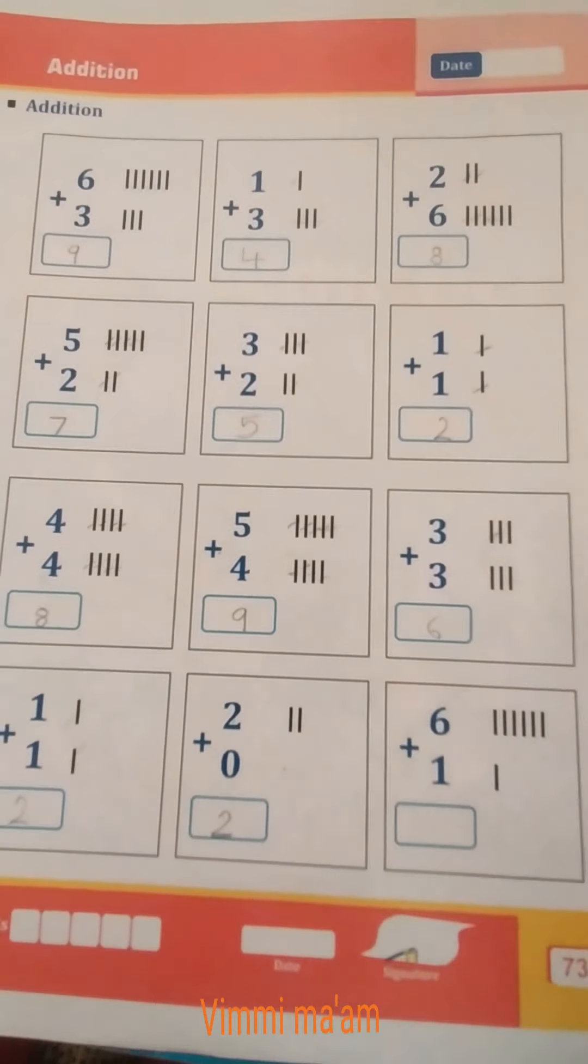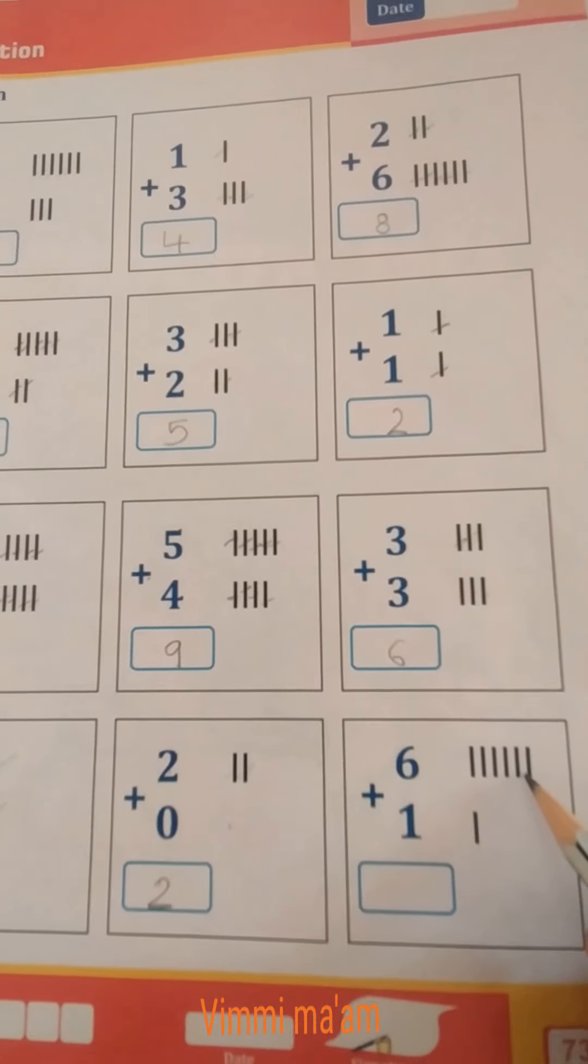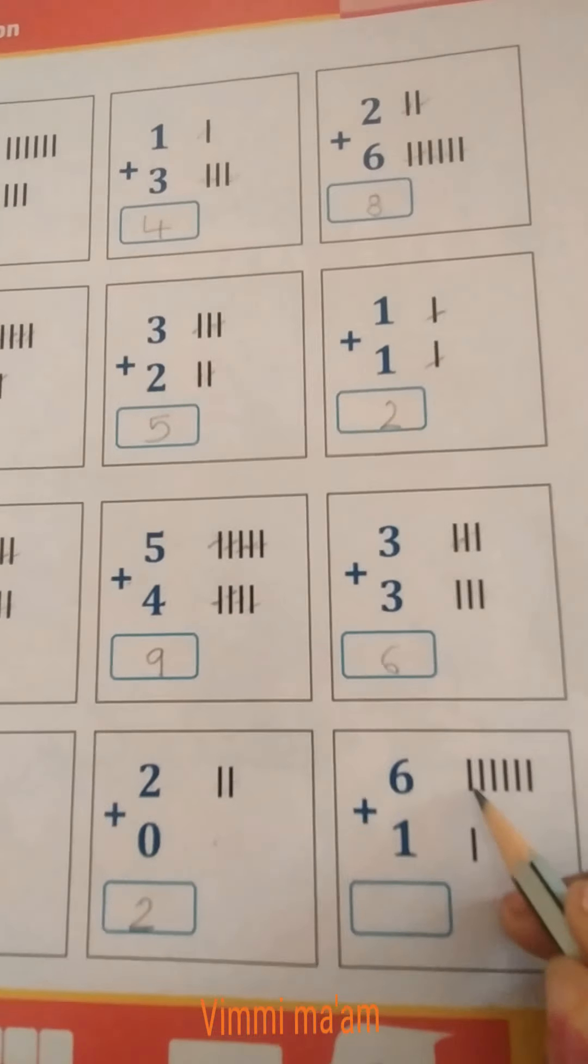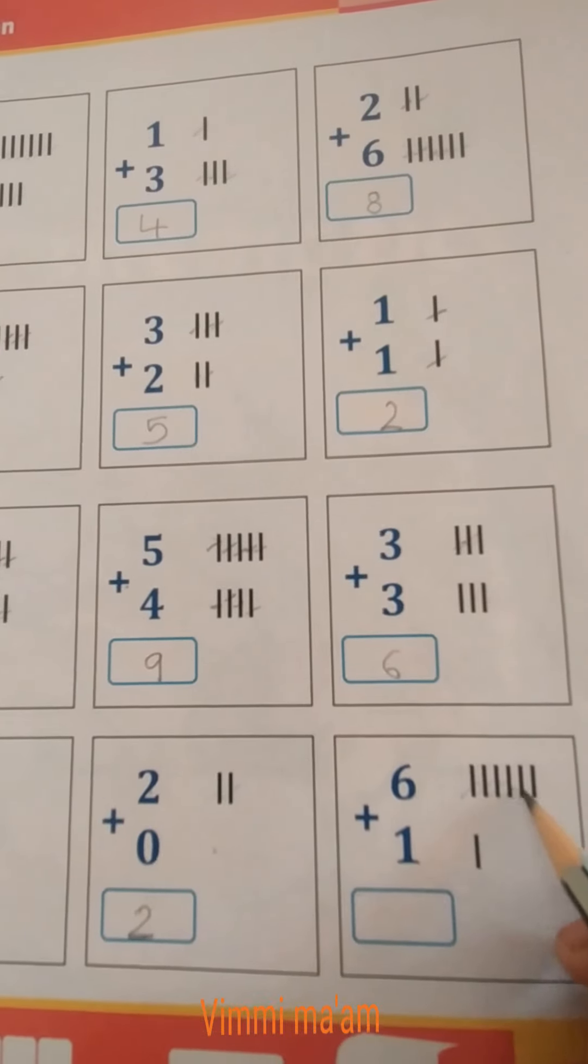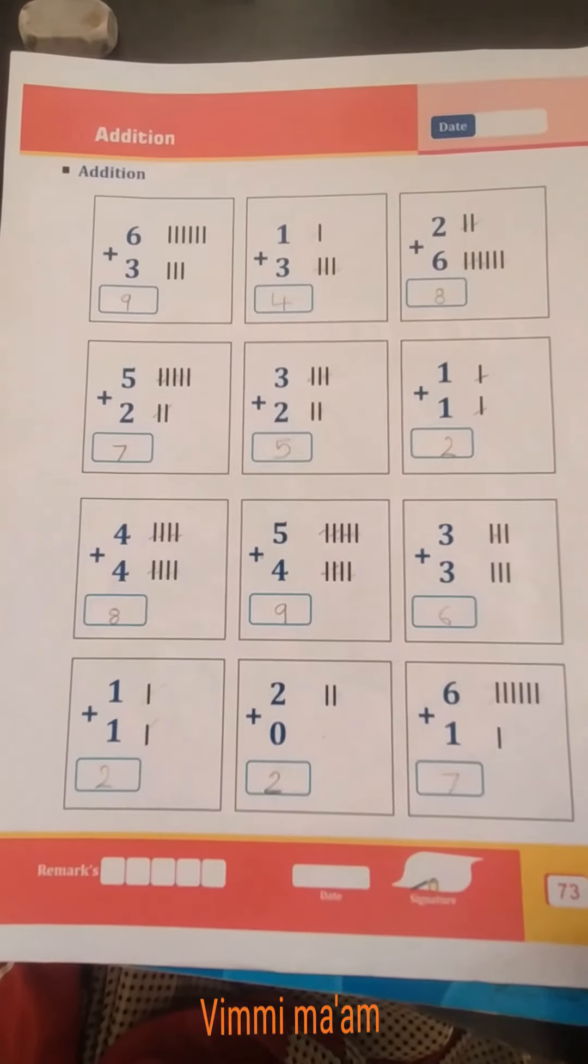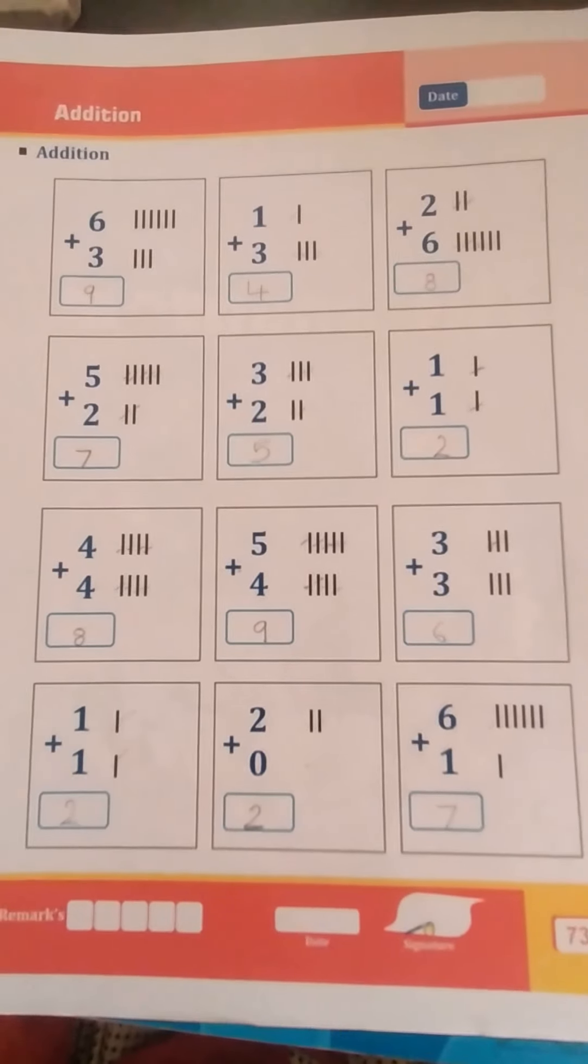6 plus 1. For 6, we draw 6 lines. For 1, we draw 1 line. Now counting: 1, 2, 3, 4, 5, 6, 7. Okay, understand children? You also do this activity in your maths textbook at your home. Thank you, bye, take care.